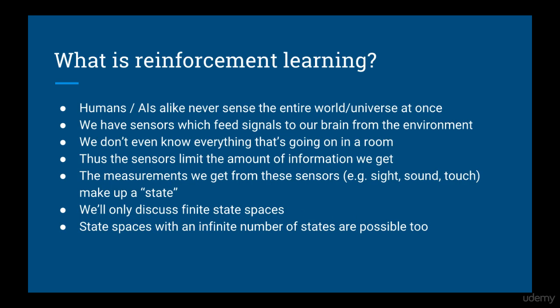Now let's get into some technical detail. Of course you can never sense the entire world at once — even humans don't do this. We have sensors which feed signals to our brain from the environment, but these signals don't tell us everything about the room we're in, much less the world. So we necessarily have limited information about our environment, as do robots with limited numbers and types of sensors. The measurements we get from these sensors — sight, sound, and touch — make up a state. In this course we'll only look at environments where there are a small, finite number of states, but it's possible to consider environments with an infinite number of states too.